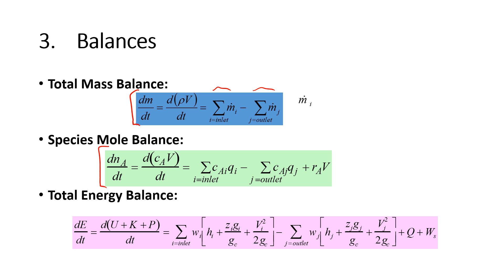We also have species mole balances. In this case, the accumulation is a species A, and then you may have species A coming in and leaving, that's just a concentration times a volumetric flow rate, and then you may have a reaction rate times a volume as well. That would be like a consumption or generation term right there.